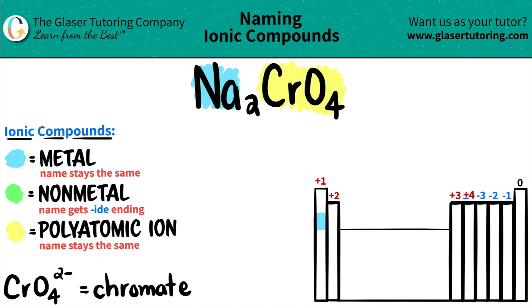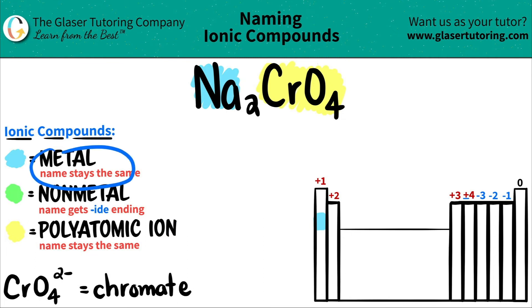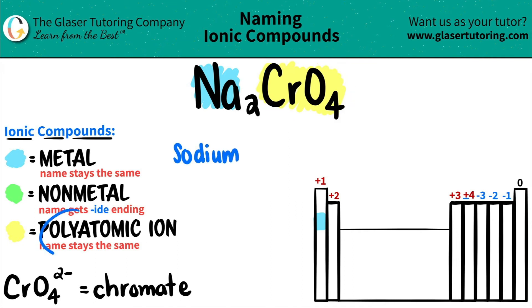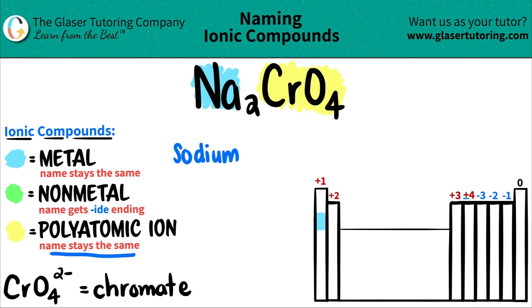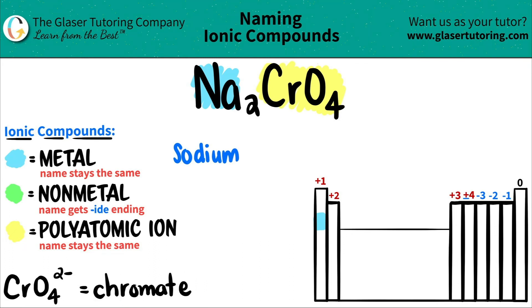Now I have all the elements accounted for, so I'm just going to start naming. The metal name comes first — sodium was named first, and the metal name always stays exactly the same, so Na would just stay sodium. Since I have a polyatomic, the polyatomic ion comes next, and that name always stays the same too. So that would be chromate.